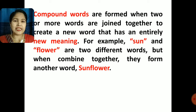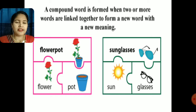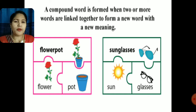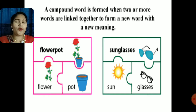A compound word is formed when two or more words are linked together to form a new word with a different meaning and different spelling. Here you can find in the picture: 'flower' plus another word gives 'flowerpot'. Same way, 'sun' plus 'glasses' gives 'sunglasses'. Hopefully you understand this definition.